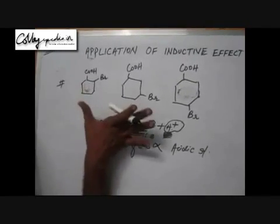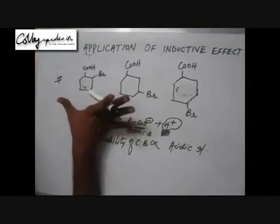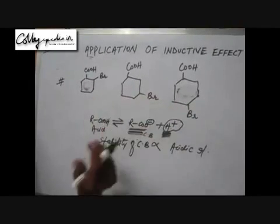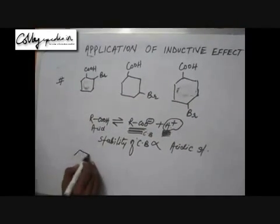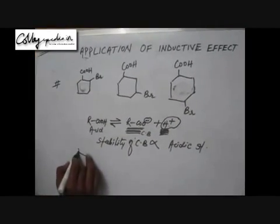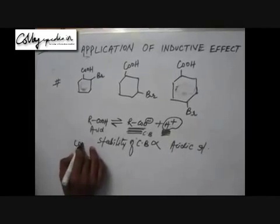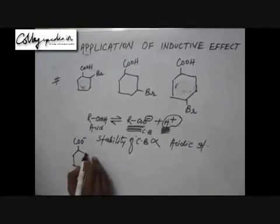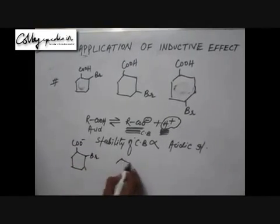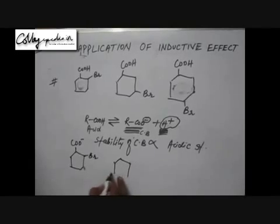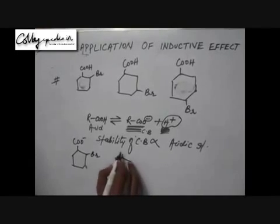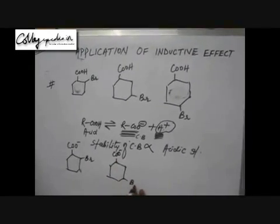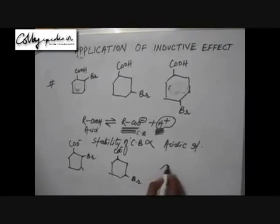We draw the conjugate bases for these three acids by removing the H+ ion from the basic structure of each acid. The conjugate bases for these three acids will look as drawn here.